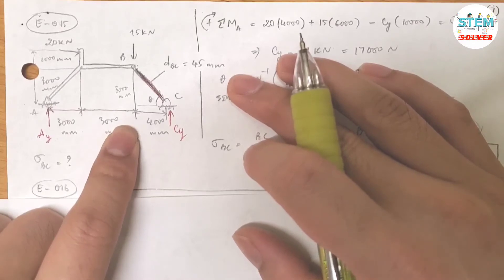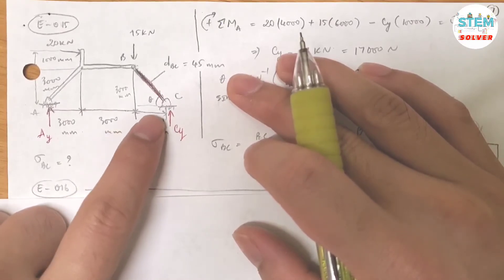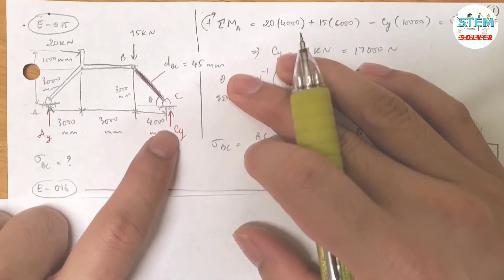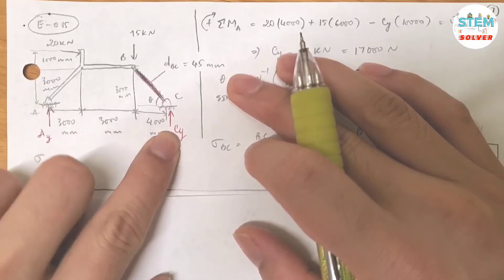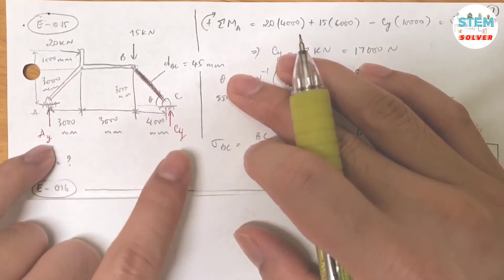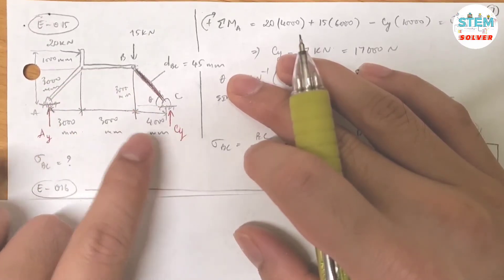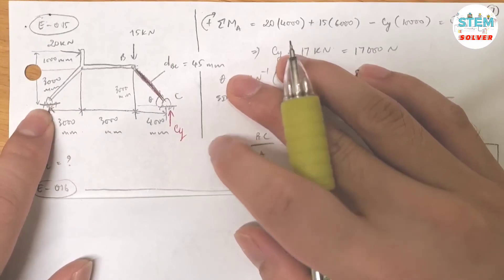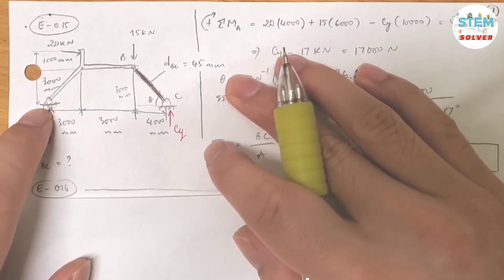So because this is in equilibrium, I can use a moment. What reference point should I pick? Because I need to find the force for this one, so I can pick the reference point here. If I pick it here, I have only one unknown.